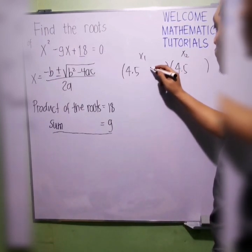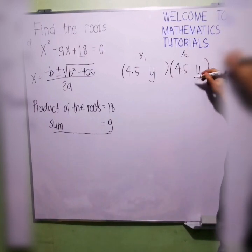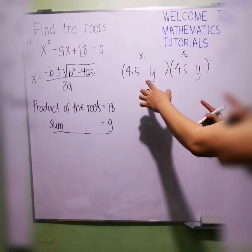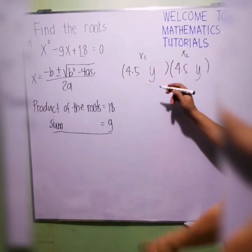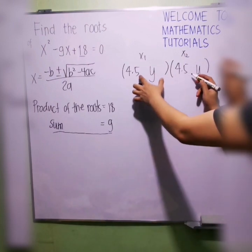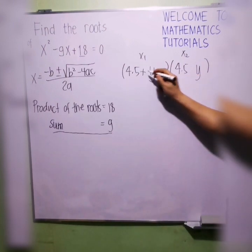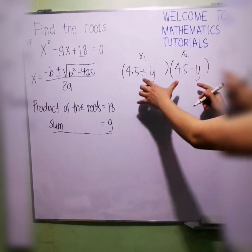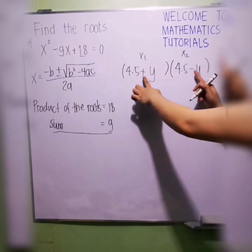We have, say, I will choose Y. The signs should be alternating or opposite. This one should be positive. The other one should be negative. You can have this as negative. This one should be positive.